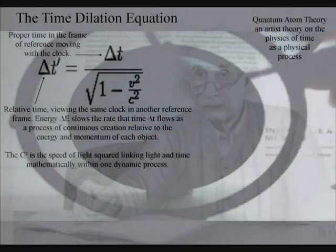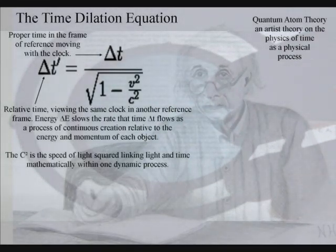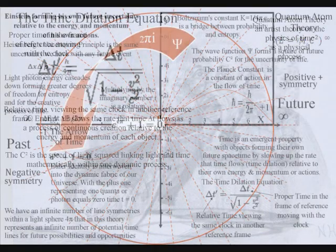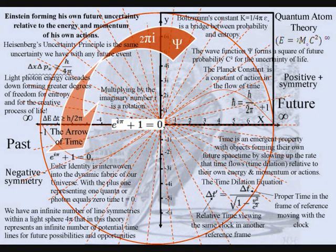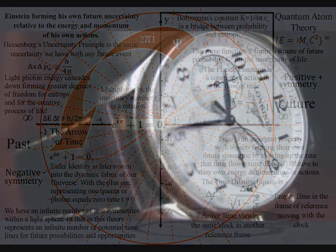Within such a process, energy slows the rate that time flows as a process of continuous creation with an uncertain future unfolding photon by photon. The spontaneous absorption and emission of light forms a continuous process that we see and feel as a passage or continuum of time.